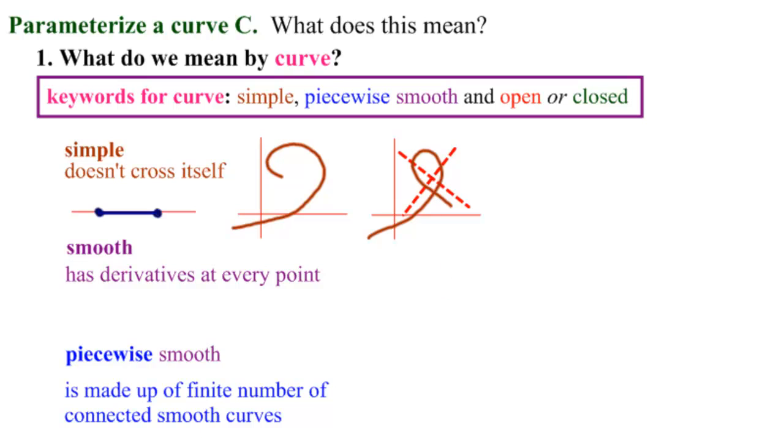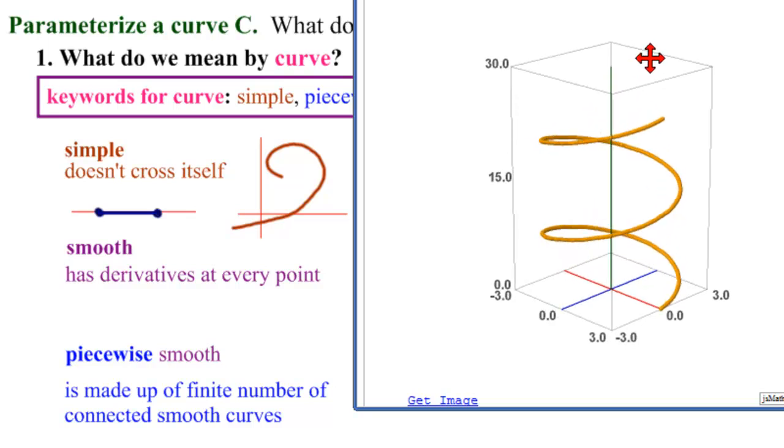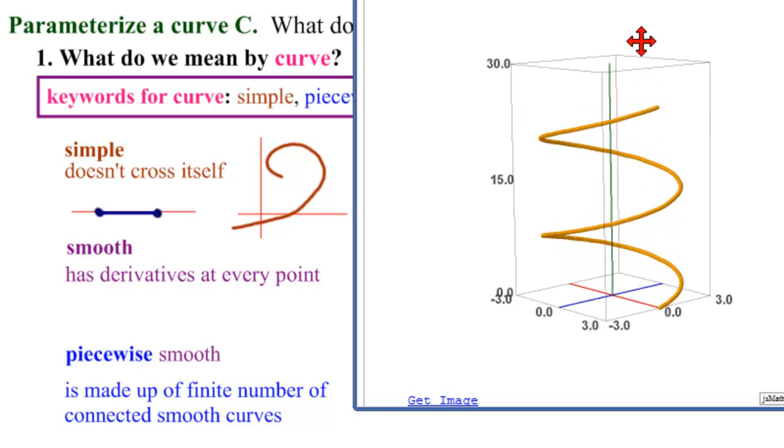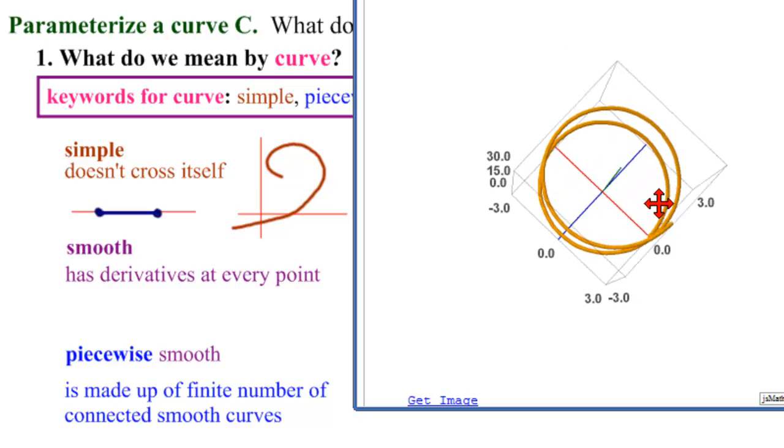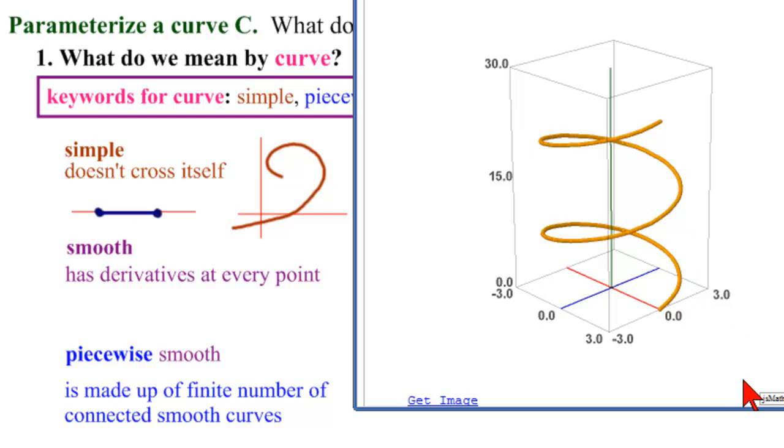How about in 3D? Here is a curve, and here is our X and our Y and our Z axes. It might look like it's crossing itself, but of course it is not. It is the helix, and it is not crossing itself in 3D. So this is a good simple curve in 3D.